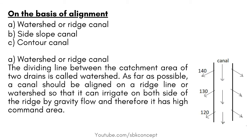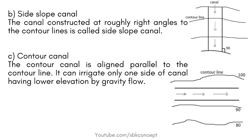On the basis of alignment: Watershed or Ridge Canal, Side Slope Canal and Contour Canal. The dividing line between the catchment area of two drains is called Watershed. As far as possible, a canal should be aligned on a ridge line or watershed so that it can irrigate on both sides of the ridge by gravity flow, and therefore it has a high command area. The canal constructed at roughly right angles to the contour lines is called Side Slope Canal. The Contour Canal is aligned parallel to the contour line, and it can irrigate only one side of the canal having lower elevation by gravity flow.